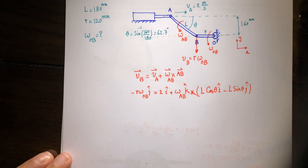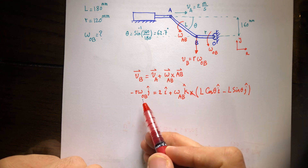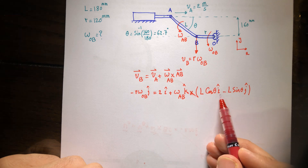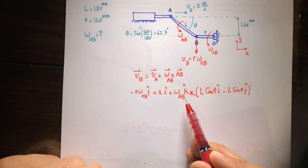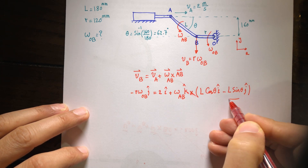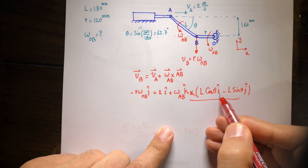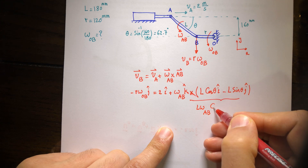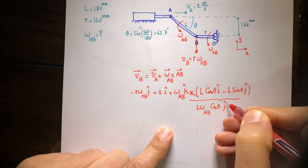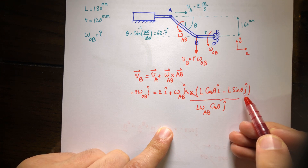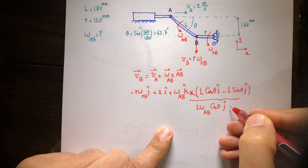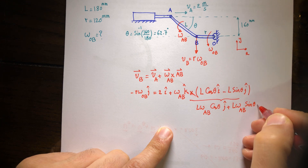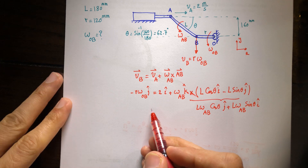In this equation, the unknowns are omega OB and omega AB — we know all other parameters. Since this is a vector equation, I can separate the I and J terms to find both unknowns. Let's compute the cross product first. K cross I is J, so we get L times omega AB times cosine of theta in the J direction. K cross J is negative I, but we have another negative, so it becomes positive: plus L times omega AB times sine of theta in the I direction. Now I can separate I and J terms.